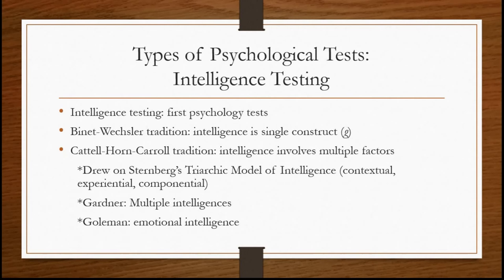This newer way of thinking about intelligence draws on the work of psychologists named Cattell, Horn, and Carroll, whose tradition says that intelligence involves multiple factors and dimensions. They drew on Sternberg's triarchic model of intelligence — contextual, experiential, and componential intelligence — and also on Gardner's idea of multiple intelligences, that we can be intelligent in different ways and areas. Another newer idea branching beyond traditional notions is Goleman's idea of emotional intelligence: some people know how to relate to others and some don't, so somebody might be very intelligent intellectually but not have very good emotional intelligence.